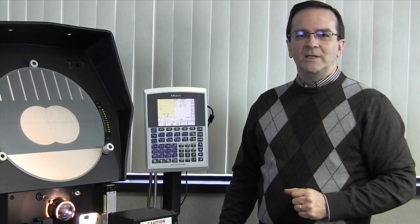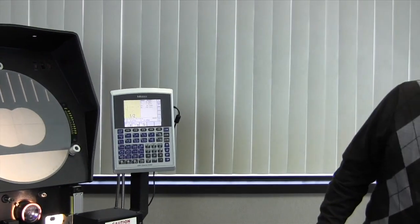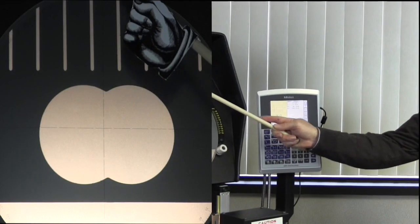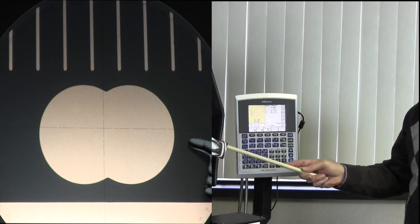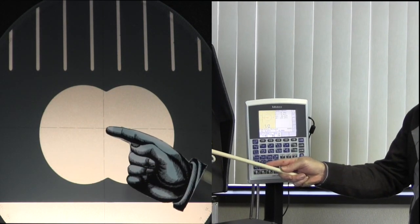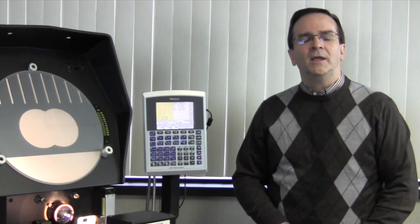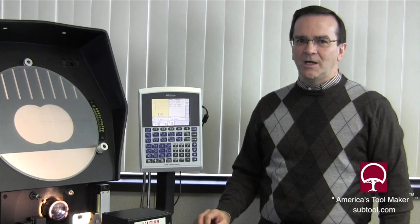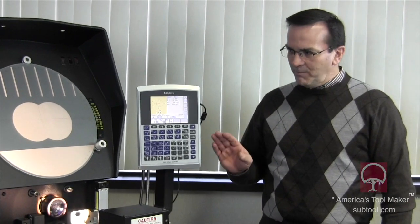The last video that we did, we talked about crosshairs and we got some feedback. People are like, what are you talking about crosshairs? If you look on this screen, you've got a vertical and a horizontal black line and that little intersection right there is the crosshairs. That's where we're taking our measurements. When we put our part edge on that intersection, that's where we take our measurements.